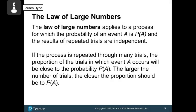The Law of Large Numbers applies to a process for which the probability of an event A is P of A, and the results of repeated trials are independent. If the process is repeated through many trials, the proportion of the trials in which event A occurs will be close to the probability of A. The larger the number of trials, the closer the proportion should be to the probability.